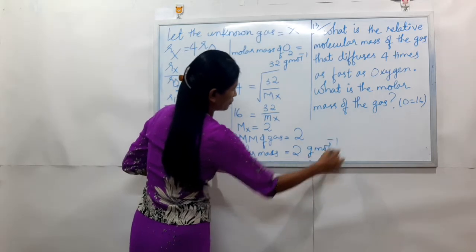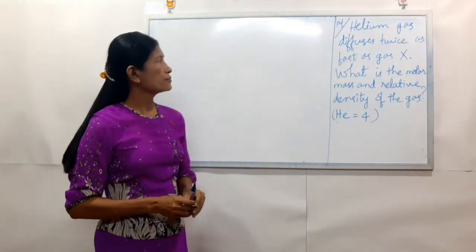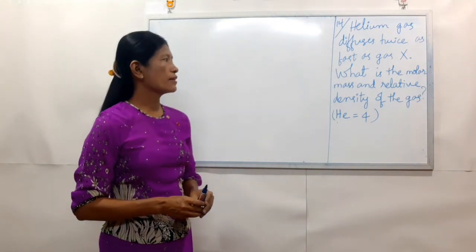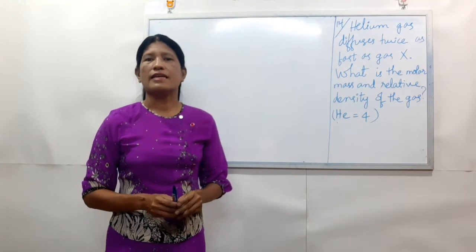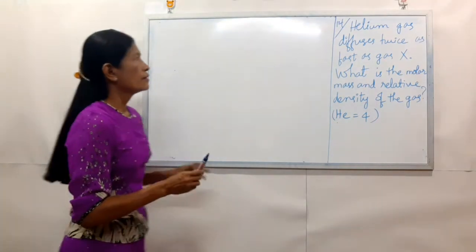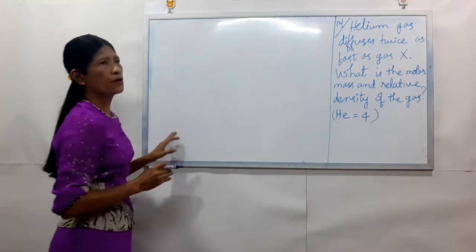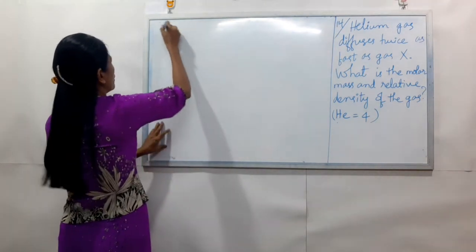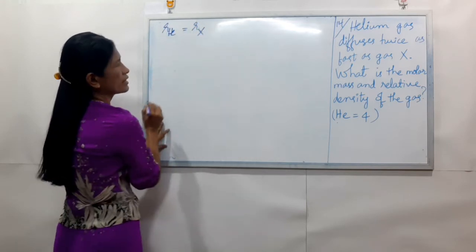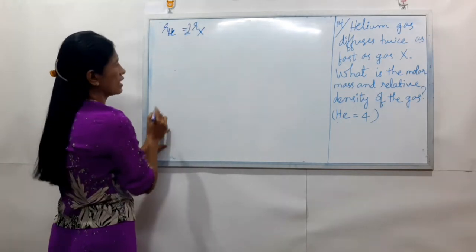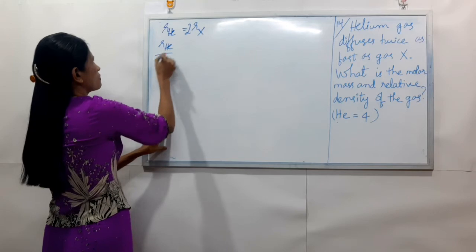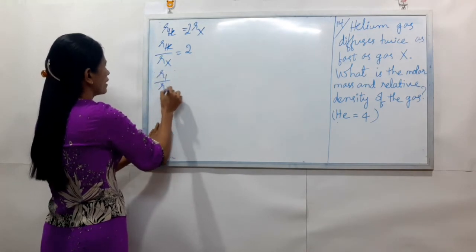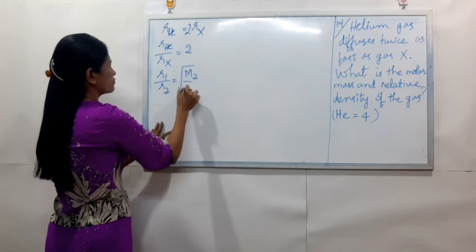The gas diffuses twice as fast as gas X. What is the molecular mass and relative density of the gas? Here, R_He equals to twice. So R_He equals 2x. R1 by R2 equals square root of M2 by M1.